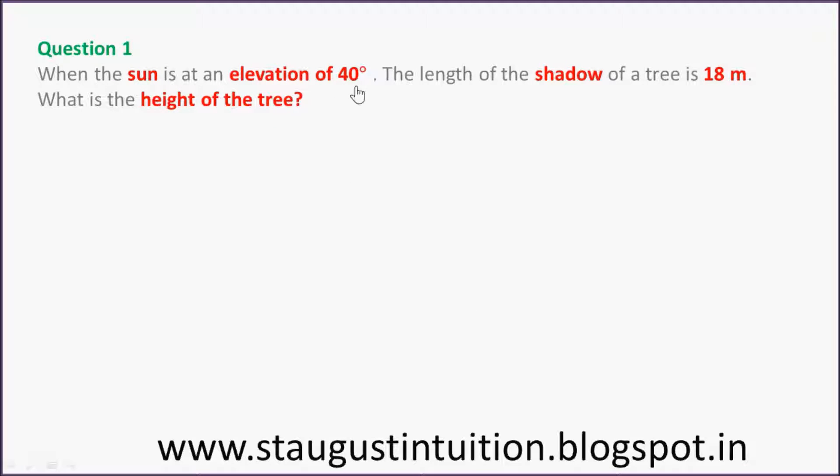When the sun is at an elevation of 40 degrees, the length of the shadow of a tree is 80 meters. What is the height of the tree?